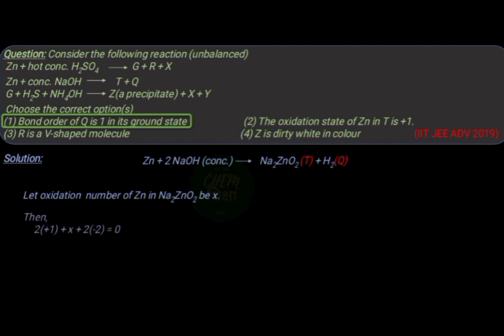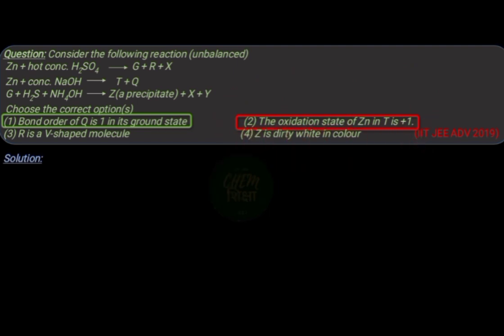by taking +1 oxidation for 2 sodium atoms and -2 for 2 oxygen atoms. Then the oxidation number of zinc is calculated to be +2. Hence, option 2 is incorrect.